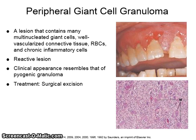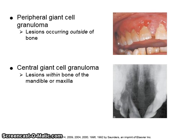A peripheral giant cell granuloma is a lesion that contains many multi-nucleated giant cells, well-vascularized connective tissue, red blood cells, and chronic inflammatory cells. It is a reactive lesion whose clinical appearance resembles that of a pyogenic granuloma. The treatment is surgical excision. A peripheral giant cell granuloma occurs outside of bone, while a central giant cell granuloma is a lesion within the bone of the mandible or maxilla.